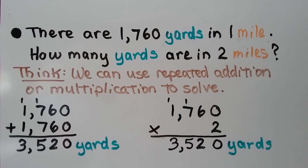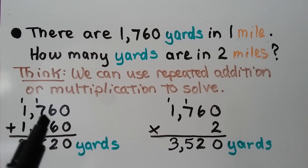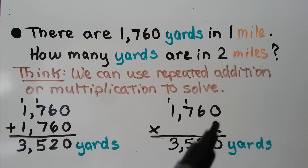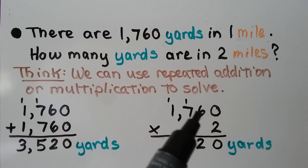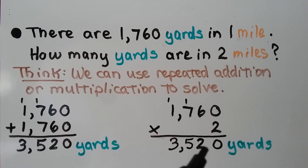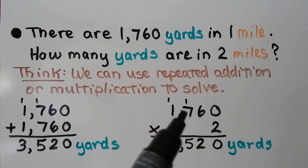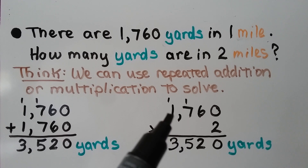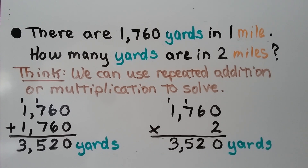There are 1,760 yards in one mile. How many yards are in two miles? We can use repeated addition or multiplication to solve. If 1,760 is one mile, we add 1,760 plus 1,760 to get 3,520 yards in two miles. We could also use multiplication: two times 1,760. Two times zero is zero, two times six is 12 (regroup the one), two times seven is 14 plus one is 15 (regroup), two times one is two plus one is three — giving us 3,520 yards.